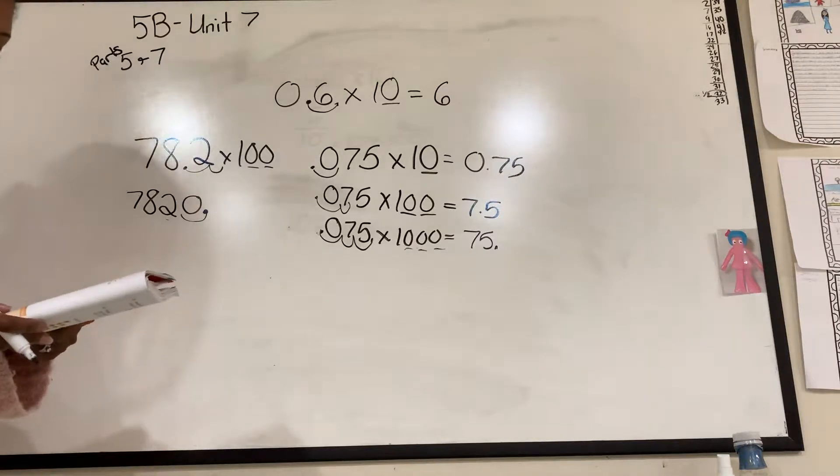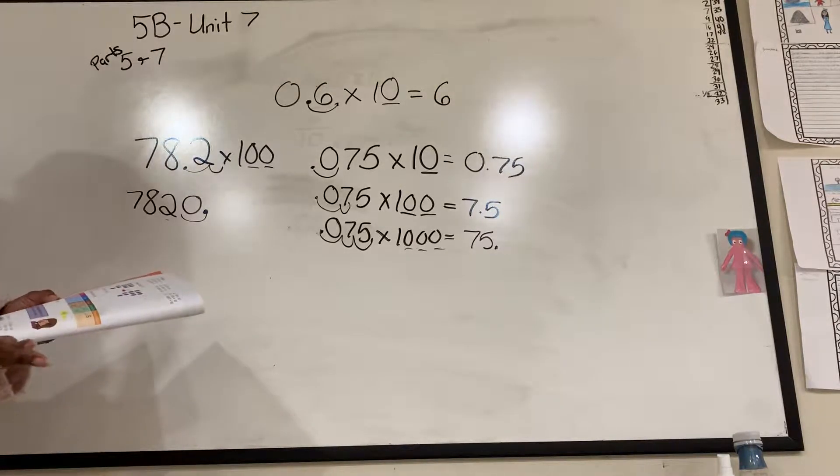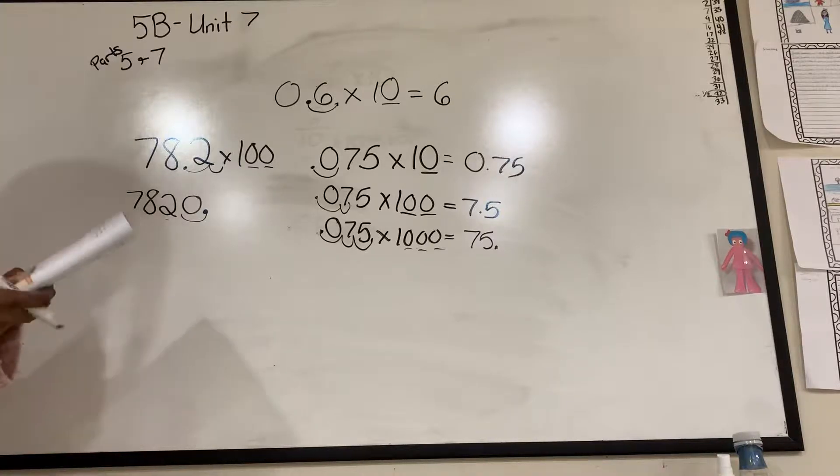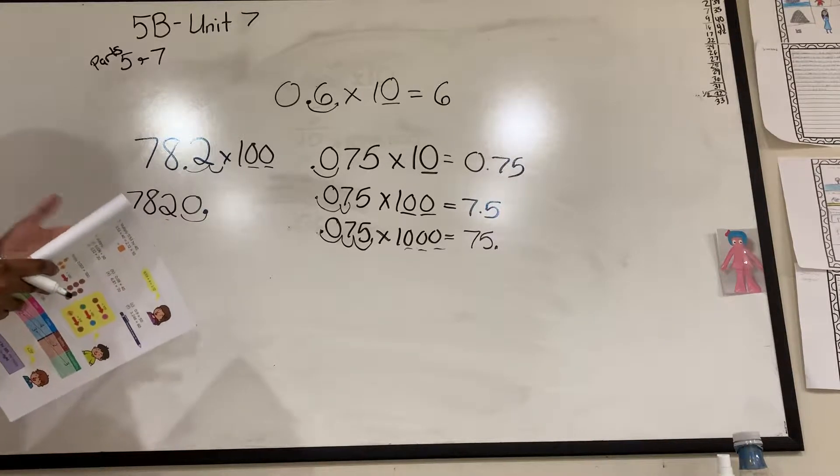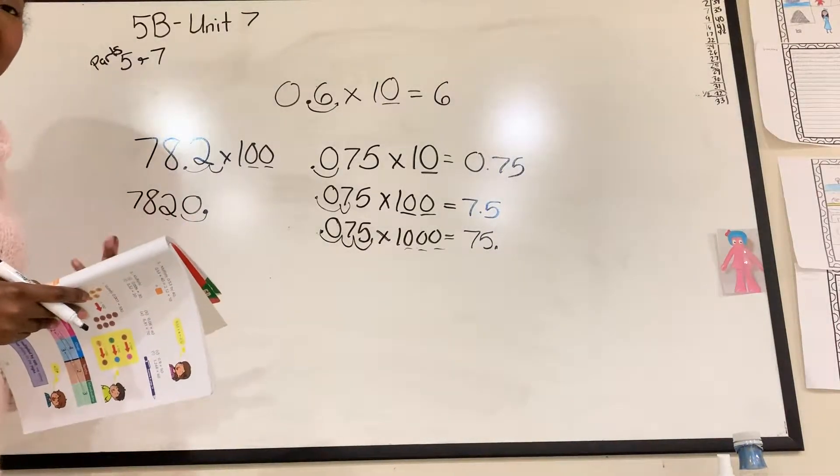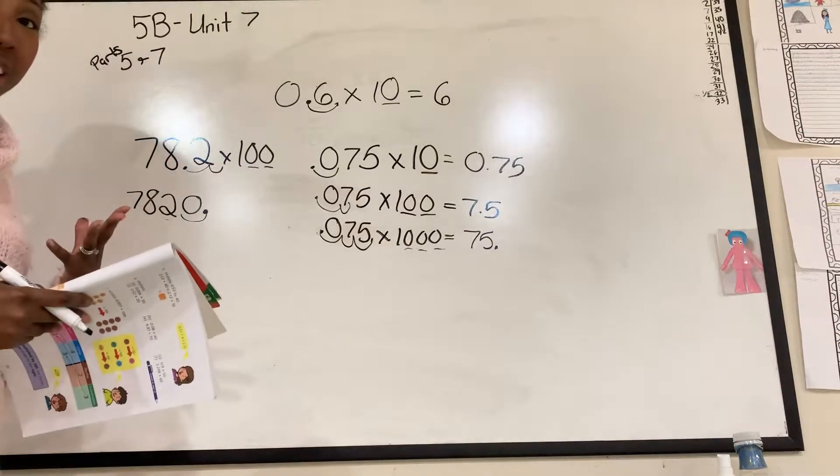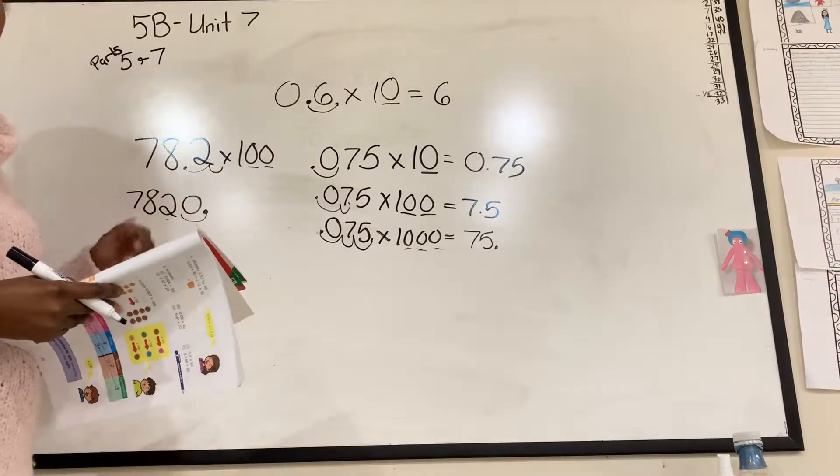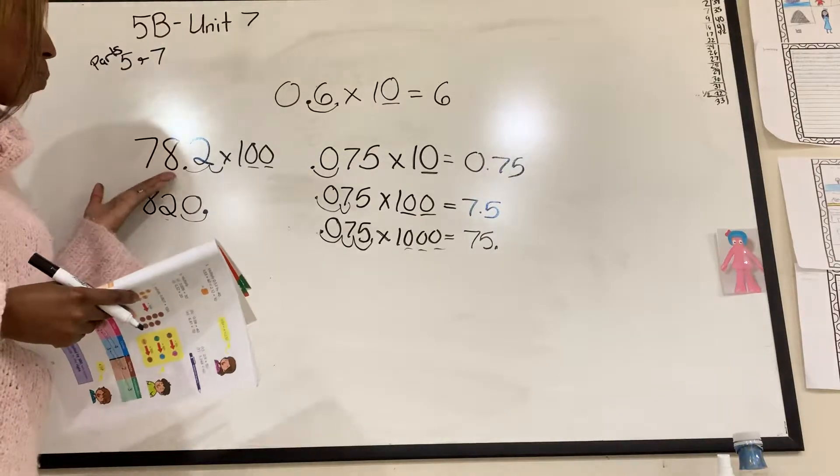So that pretty much sums up when you're multiplying it by tens or hundreds or thousands. You just move it and make the number bigger. And sometimes it might get confusing, but I know if I had one cookie and I multiplied that cookie by 10, I would have a lot more cookies. So therefore, when you're doing this, you have to think, I'm multiplying. I'm making more. So my number gets bigger.